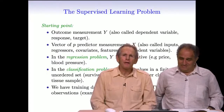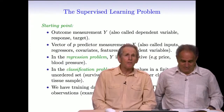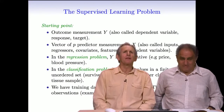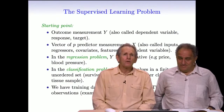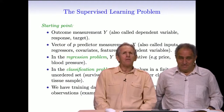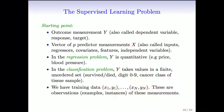Now we're going to talk about the supervised learning problem and set down a little bit of notation. We'll have an outcome measurement y, which goes by various names: dependent variable, response, or target. Then we'll have a vector of p predictor measurements, which we usually call x. They go by the name inputs, regressors, covariates, features, or independent variables.